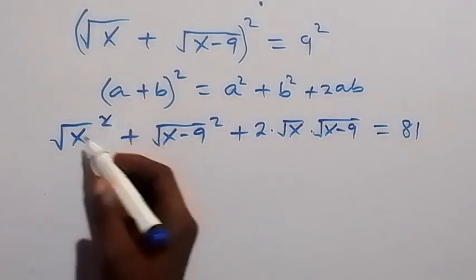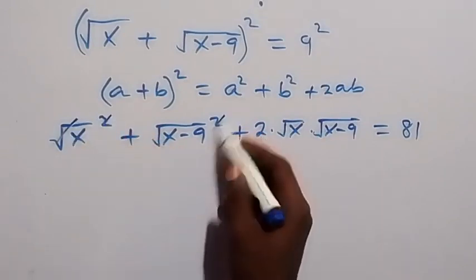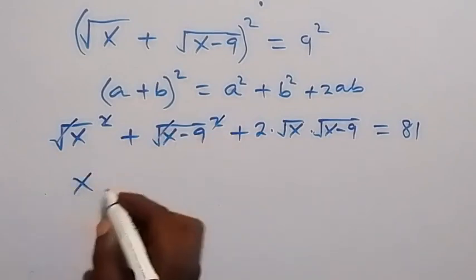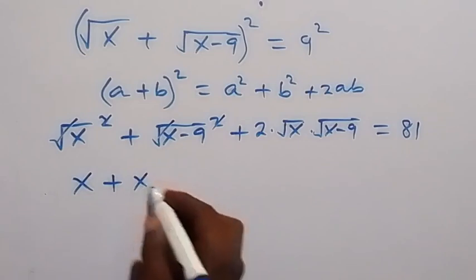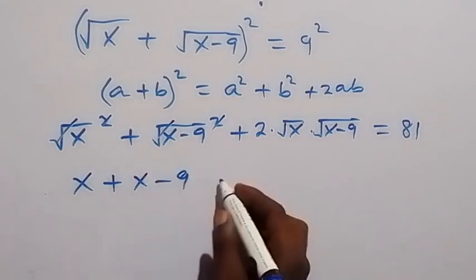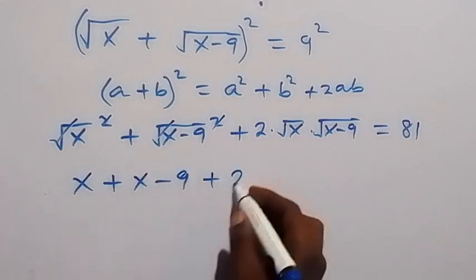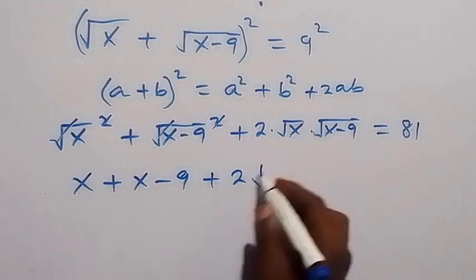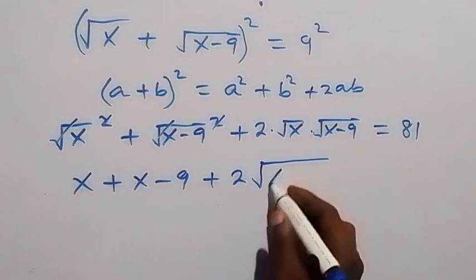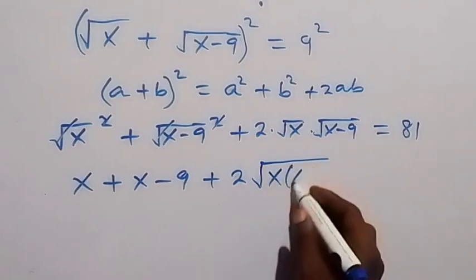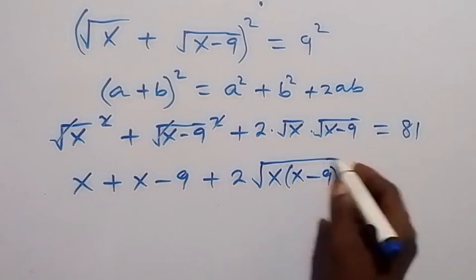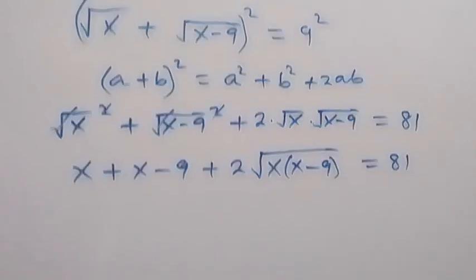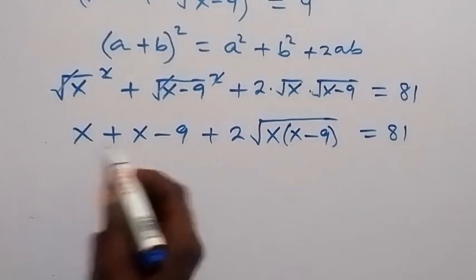The square here cancels the square root, so we are left with x plus x minus 9, then plus 2 multiplied by — bringing it under the same root — root of x into bracket x minus 9, which equals 81.